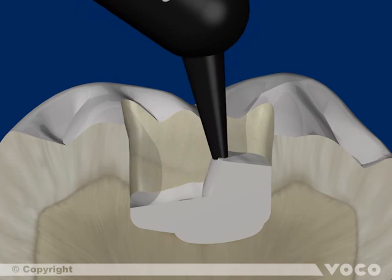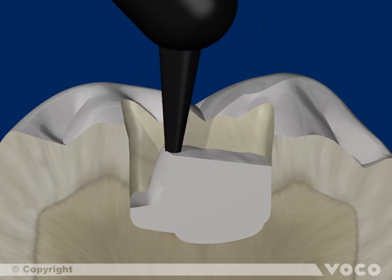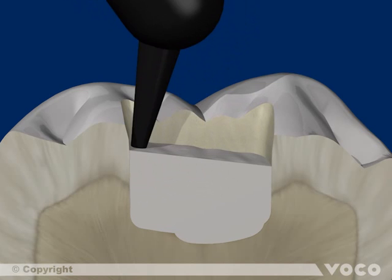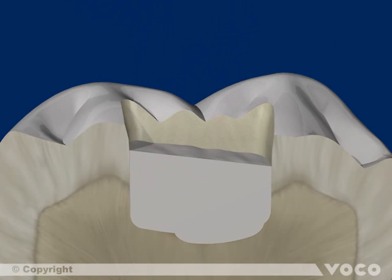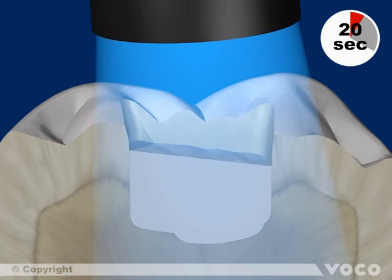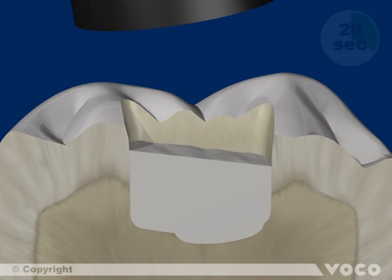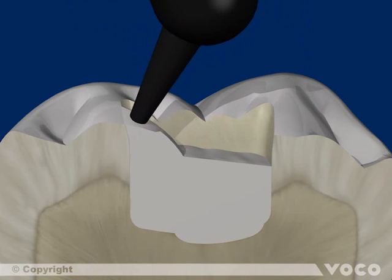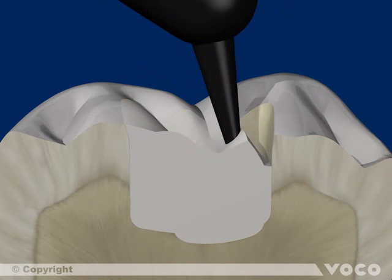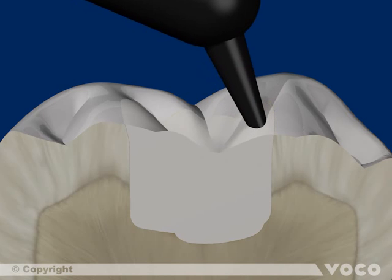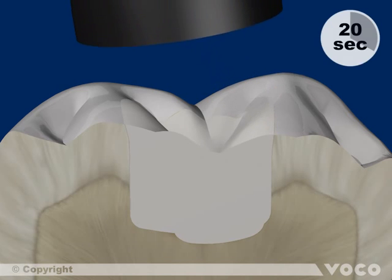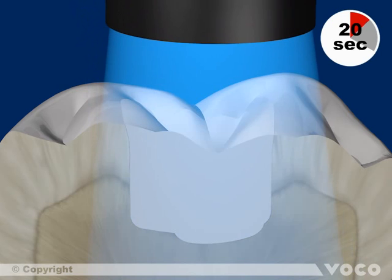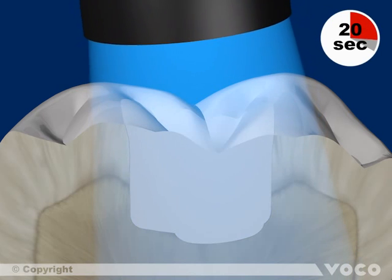Additional composite increments, which are carefully polymerized by light, complete the filling. The last increment is modeled following the anatomy of the tooth and polymerized after. Furthermore, and not shown here, would be occlusion control and a high gloss polishing to complete the restoration of the tooth.